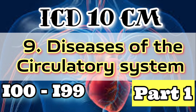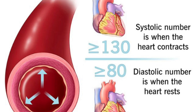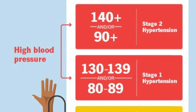Let's get into chapter 9, disease of the circulatory system, series I00 to I99. The first topic is hypertension. Hypertension in general terms is known as high blood pressure — hyper means high, tension means pressure. It occurs when the pressure in the blood vessels is too high. A patient with systolic 140 and above and diastolic 90 and above is considered hypertensive, as confirmed by the treating physician.